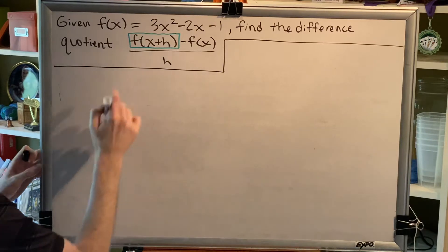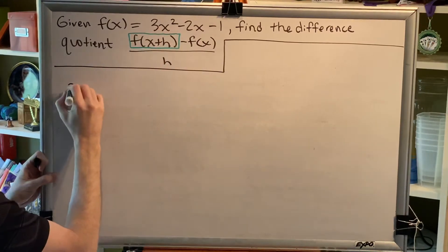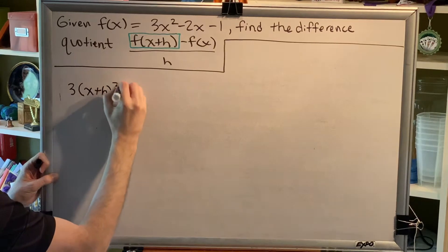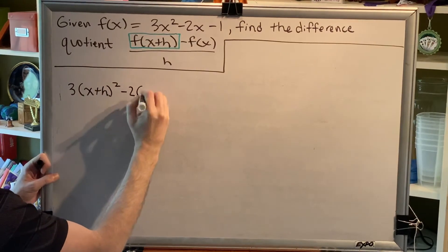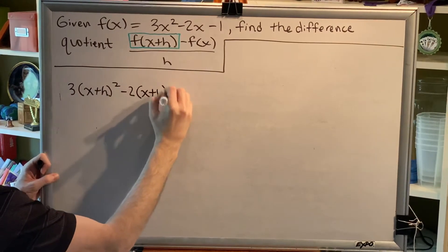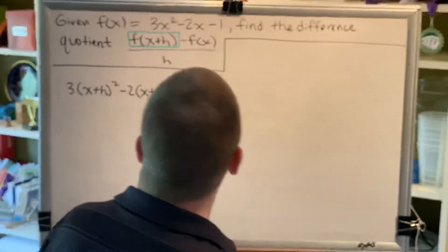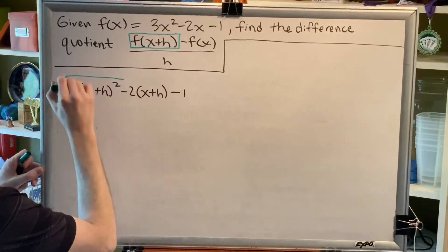This first part of our problem is going to be 3 parenthesis x plus h, close parenthesis squared, minus 2 parenthesis x plus h, close parenthesis minus 1. This is the green box. This is the green box.